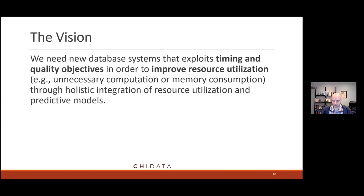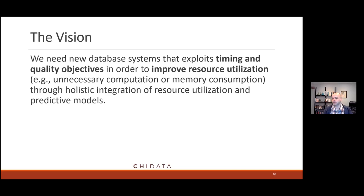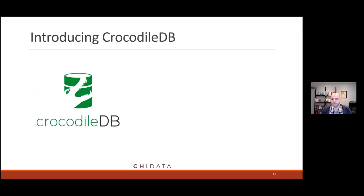Our vision is that data-driven systems really need to be able to take explicit information about timing, quality objectives, and performance objectives — how fast do I need this, when do I need this result by, when am I going to run this? This helps us make better decisions about how to improve overall resource utilization. Can we avoid unnecessary computation or wasted memory resources? We want to do this by building better hooks throughout the whole database, getting better integration throughout the whole system to exploit resource utilization better, largely by using predictive models.